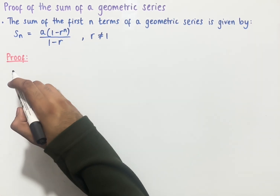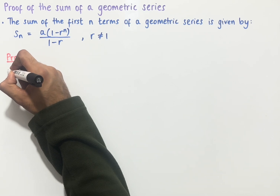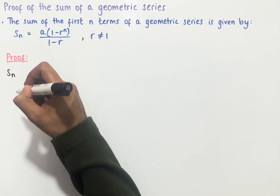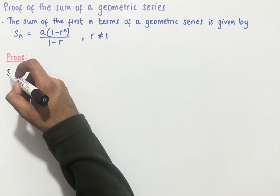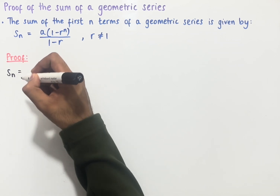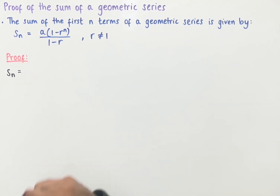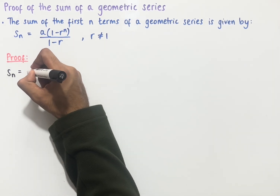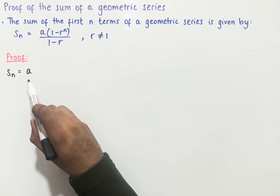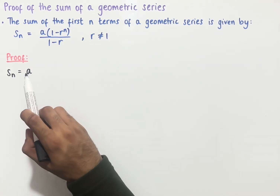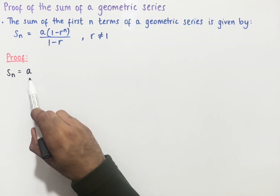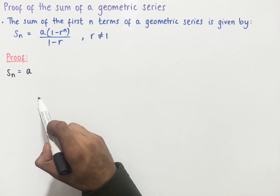For the proof, we're trying to work out the sum of the first n terms of a geometric series, which we'll call Sn, and so we'll write out some of the terms in this series. The first term we represent as a, and now we multiply each of the terms by a common ratio, which in this case we'll call r.